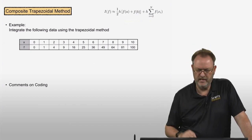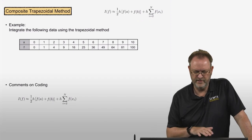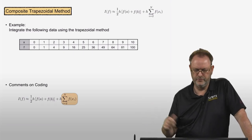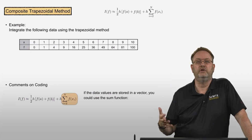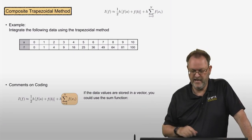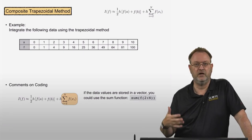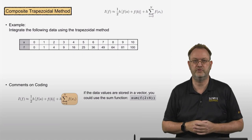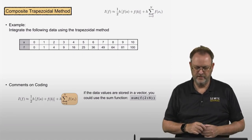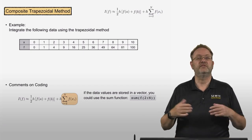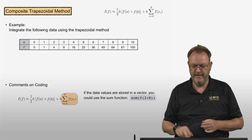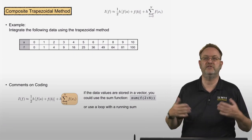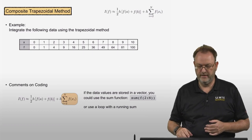Comments on coding: to implement the composite trapezoidal method, you need the sum from i=2 to n of the interior function values. If the data is stored in a vector in MATLAB, you can use the sum function: sum(f(2:n)). Alternatively, use a loop with a running sum variable s, initialized to 0, with a for loop running from 2 to n.